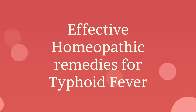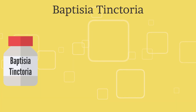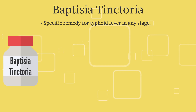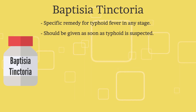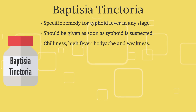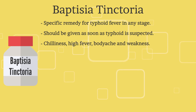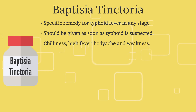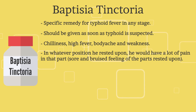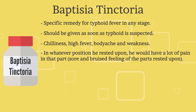Now let us proceed to the management of typhoid fever through effective homeopathic remedies. There are many remedies for typhoid fever in homeopathy, but here we will discuss some of the commonly used remedies only. The first and most effective remedy is Baptisia Tinctoria. It is the specific remedy for typhoid fever in any stage and should be given as soon as typhoid is suspected. When the patient suffers from chilliness, high fever, body ache, and has become very weak, this remedy can be used. The patient may say that in whatever position he rested, he would have a lot of pain in that part — if this is the case, then one can use this remedy.